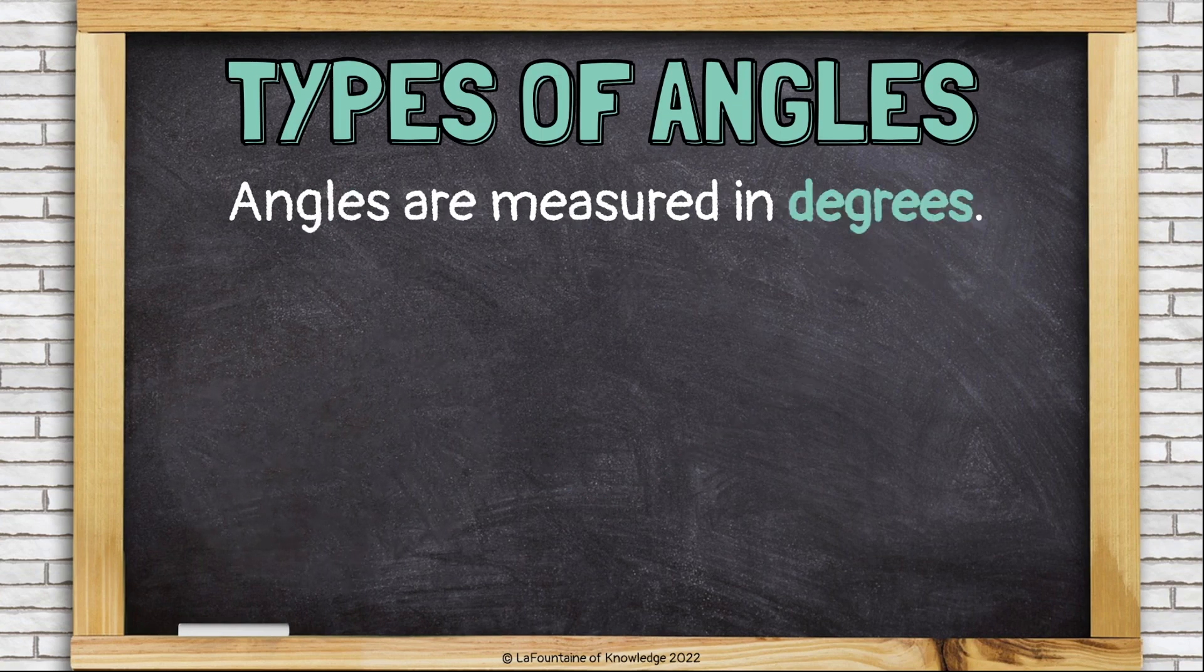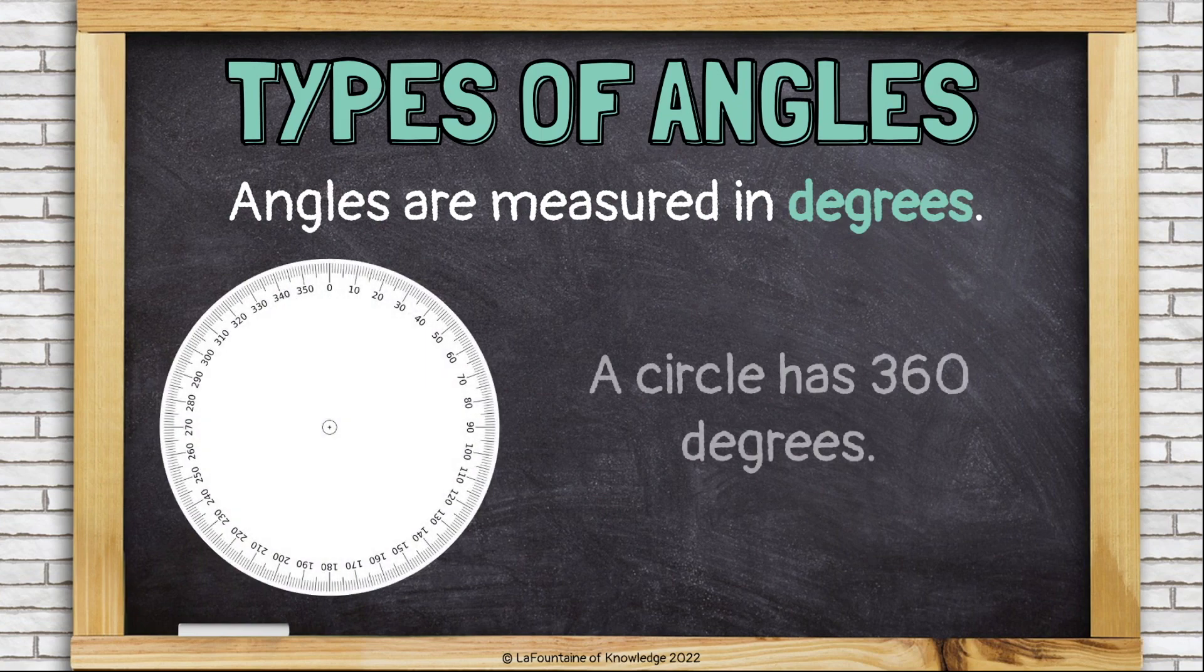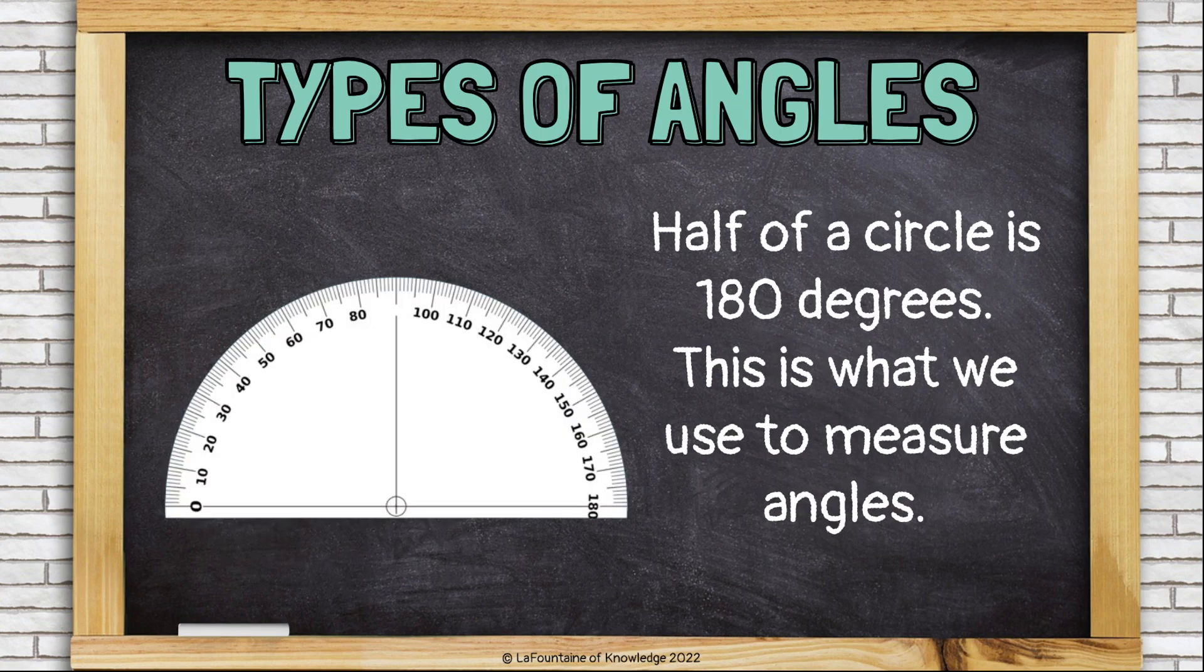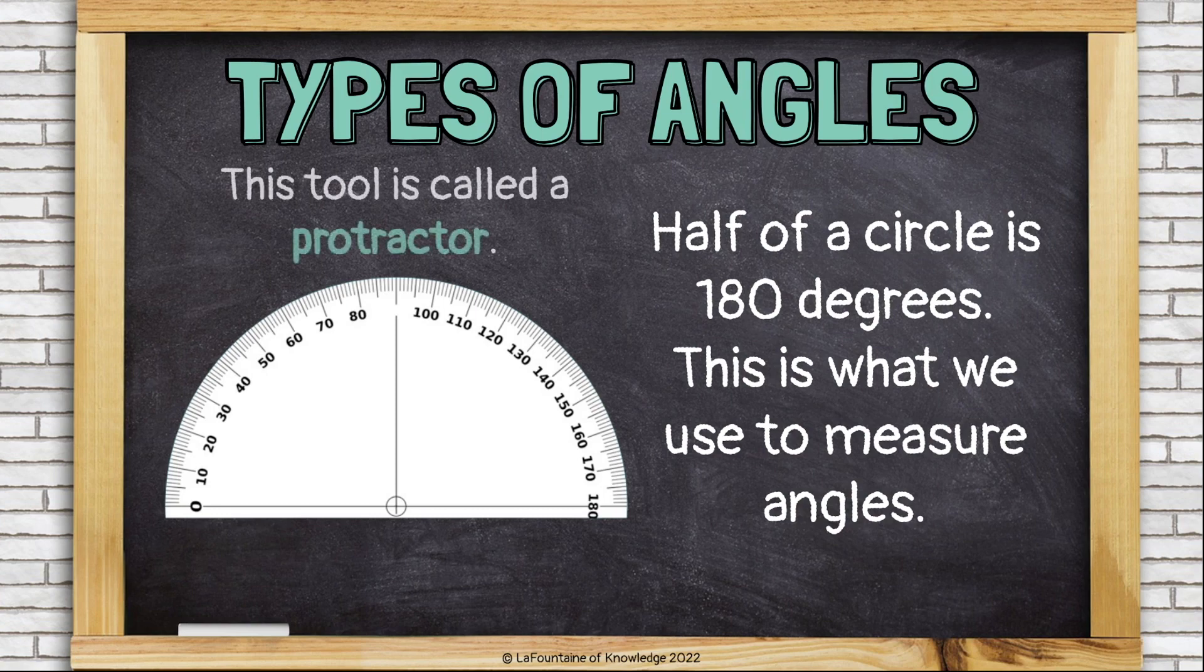Angles are measured in degrees. A circle has 360 degrees. Pieces of a circle form angles, just like pieces of a pie. This angle measures 50 degrees. Half of a circle is 180 degrees. And this is what we use to measure angles. This tool is called a protractor.